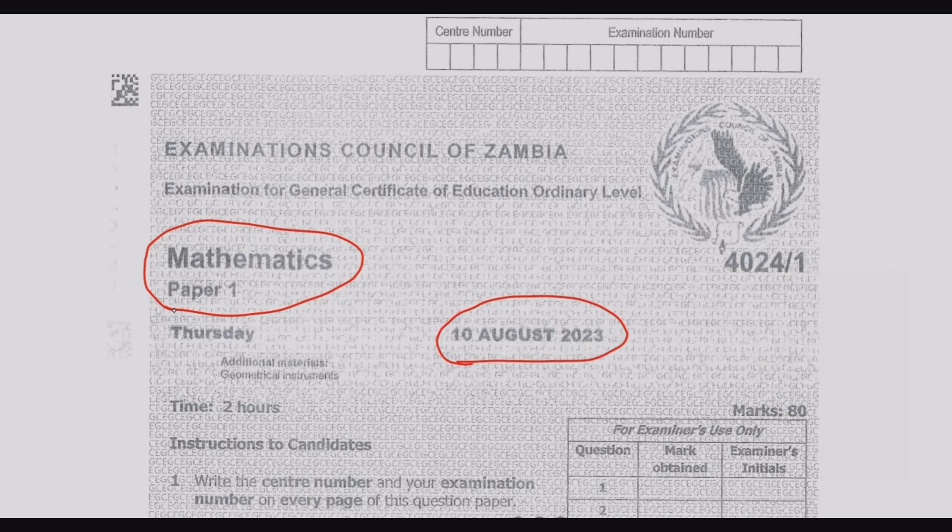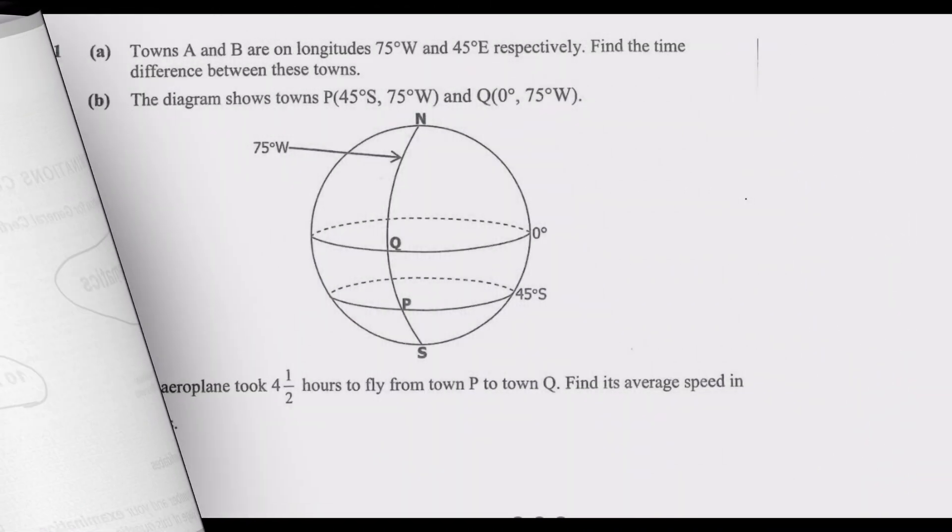Let us look at question 11. Towns A and B are on the longitudes 75 degrees west and 45 degrees east respectively. Find the time difference between these towns. The question requires us to find the time difference, so we need to take note of what the question wants. To find the time difference we need to know the difference in the degrees. One is 75 degrees west, the other one is 45 degrees east. One is in the west, the other one is in the east.